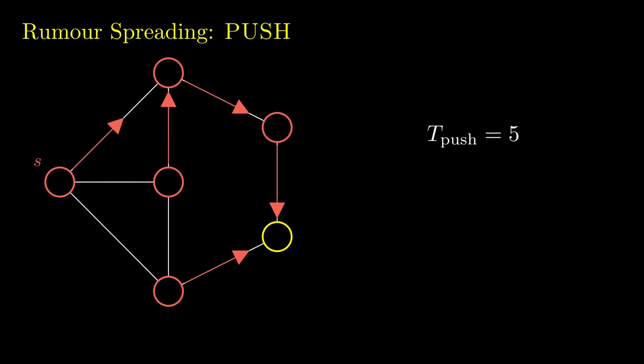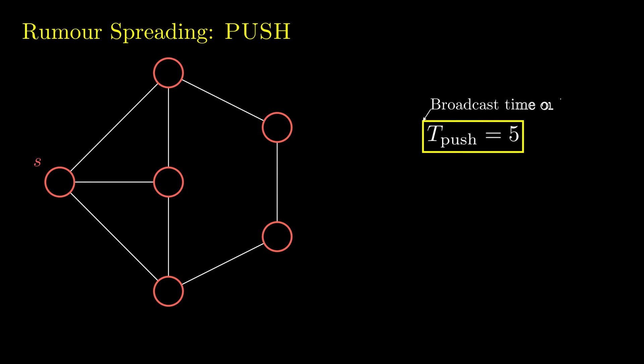For example, the conductance, the diameter and max degree, etc. In many cases, for example in expanders, these processes take logarithmic time and yet are very simple. We started studying visit exchange, asking the question of how fast is agent-based rumor spreading.